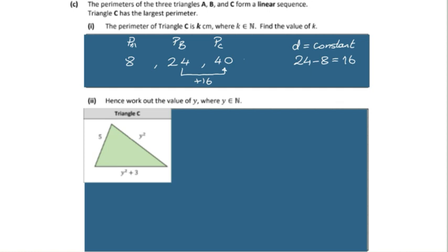So let's go down to part B because we need to solve for y. We have 5, y squared, and y squared plus 3. Let's see how it works out. We have a y squared. So we're going to have to put all of this together. So we'll go the sum of the three sides.